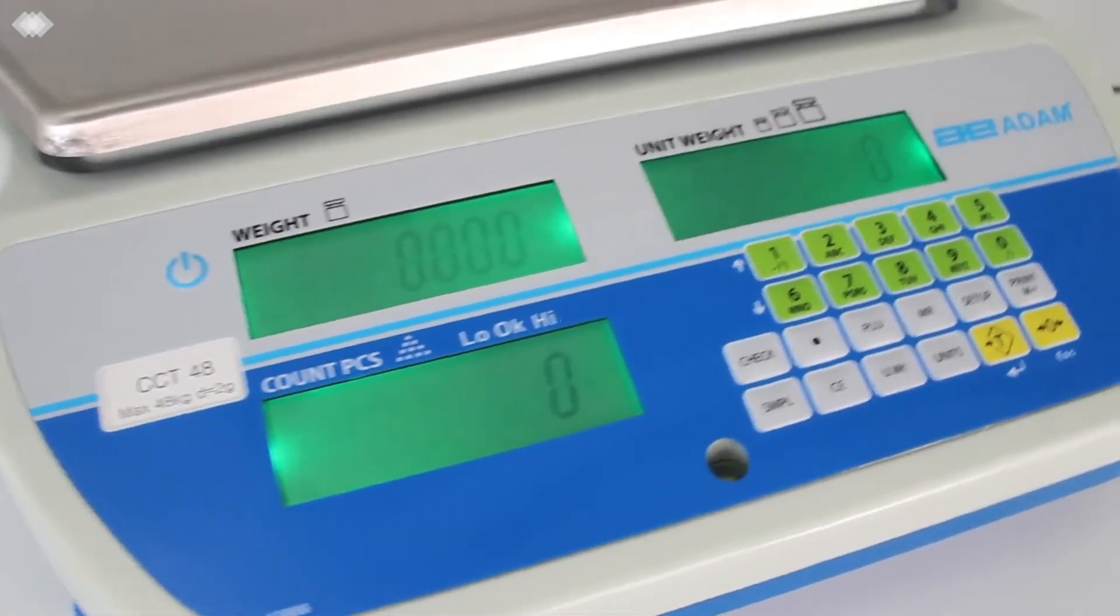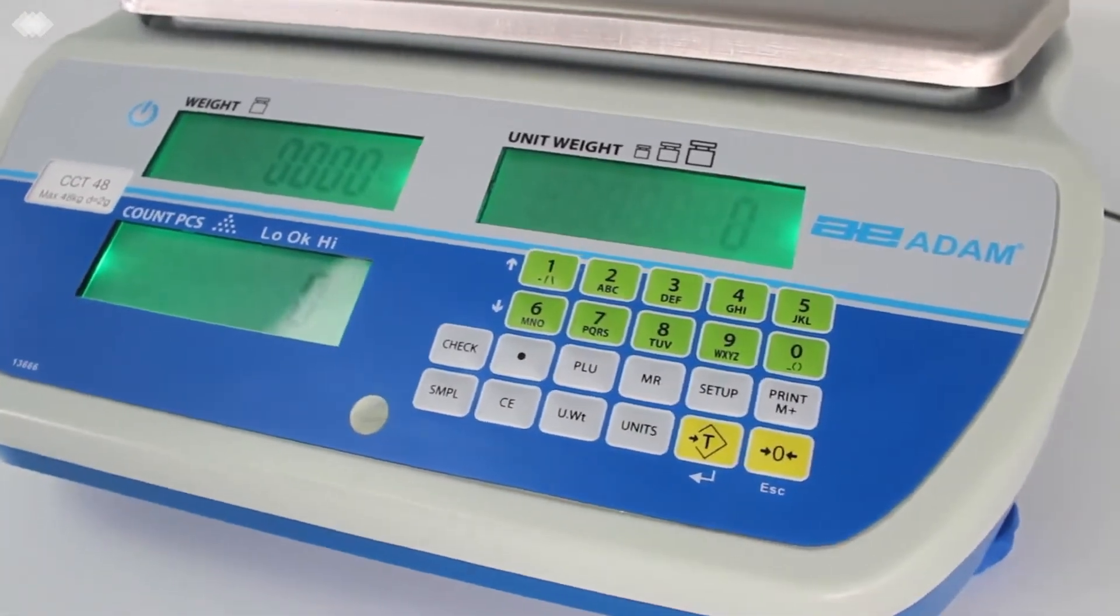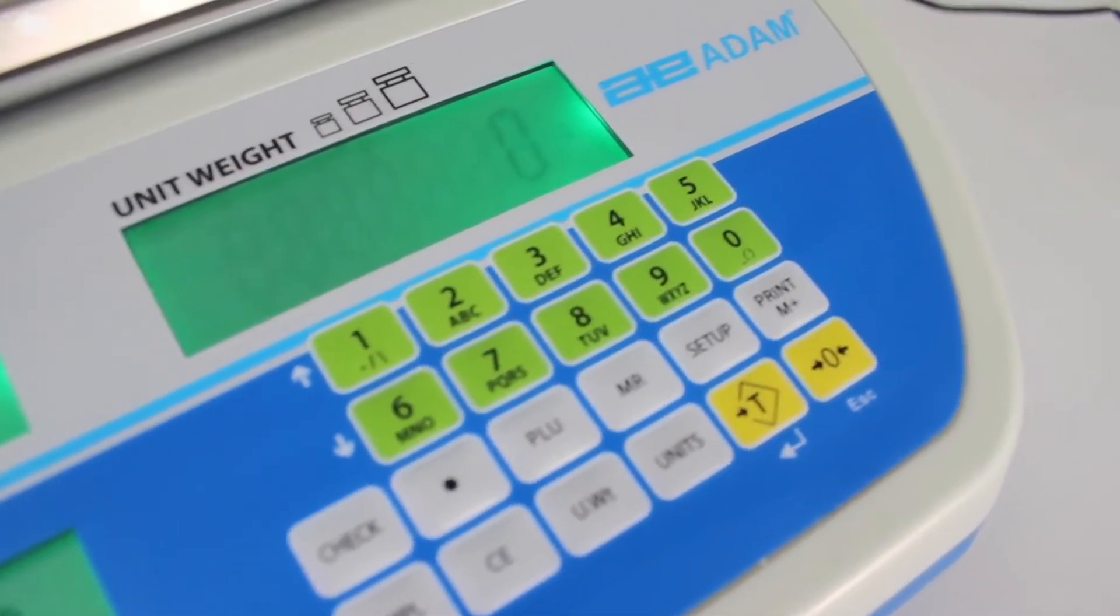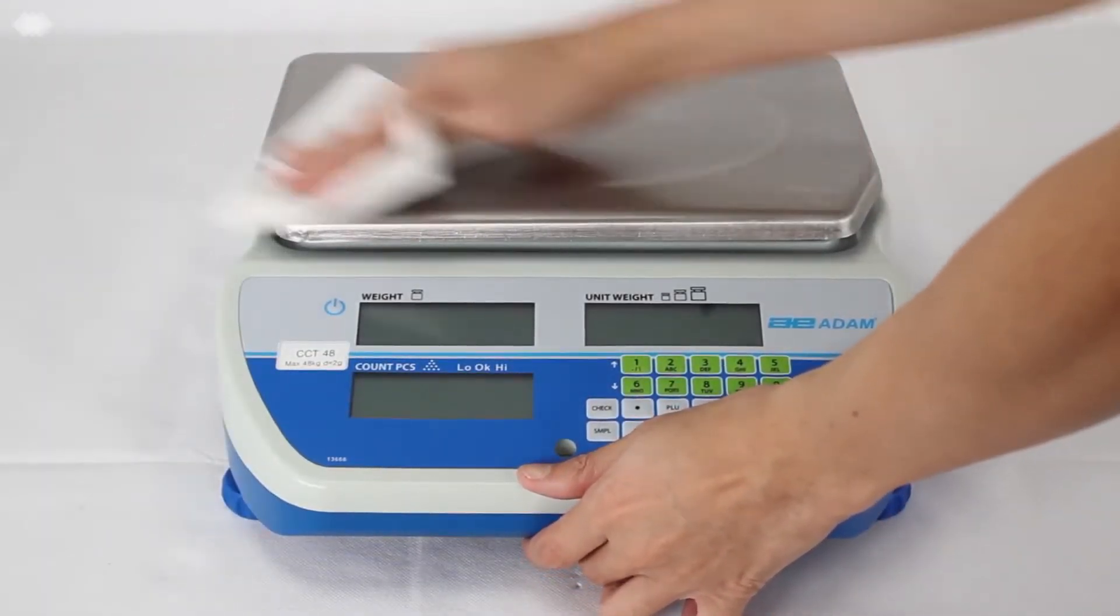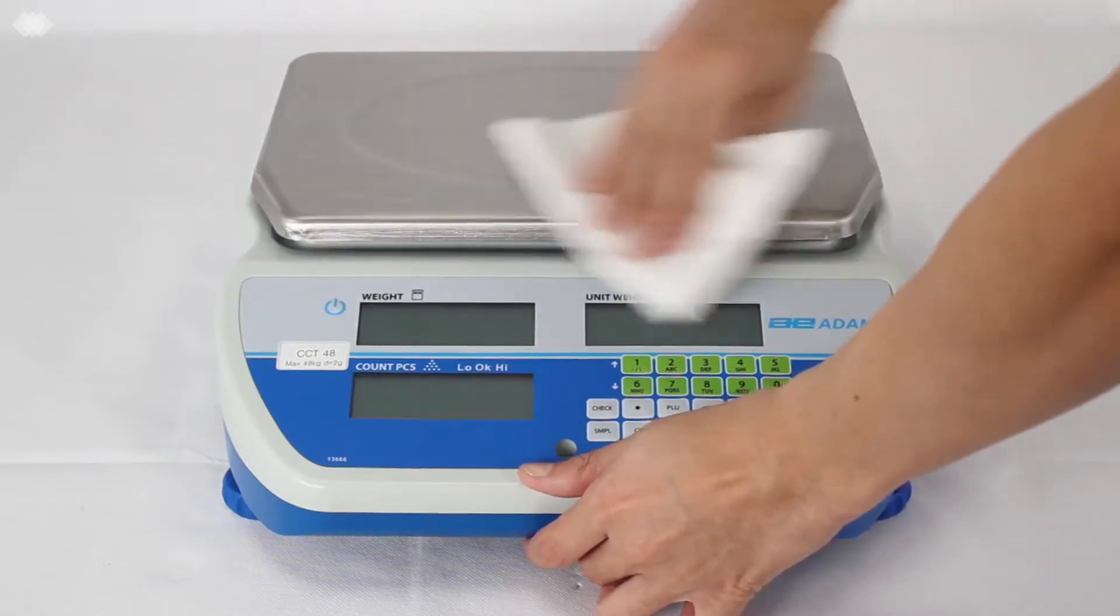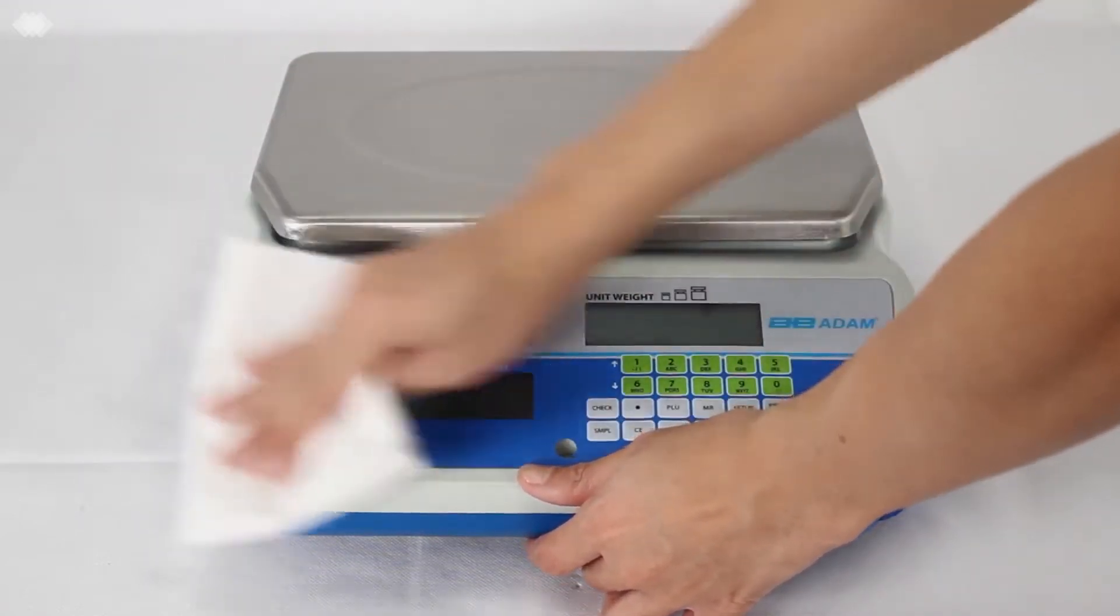Sturdy construction means cruiser scales can withstand the demands of factories and manufacturing facilities. All CCT models have a heavy-duty grade 304 stainless steel platform with contours to help items stay on the pan.